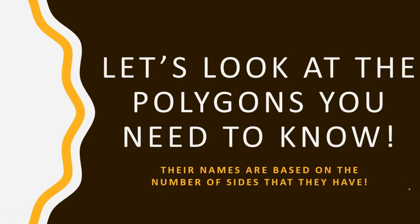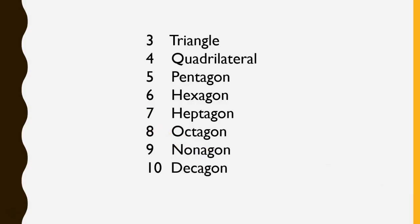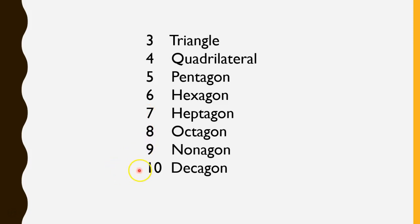Now let's take a look at all the polygons that you need to know. Their names are based on the number of sides that they have. We're going to start with our most common one — a triangle, which has three sides. A quadrilateral has four sides. Pentagon has five. Hexagon has six. Heptagon has seven. Octagon has eight. Nonagon has nine. And decagon has ten.